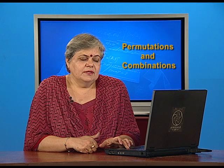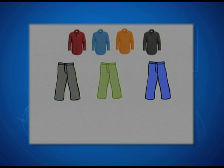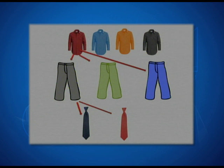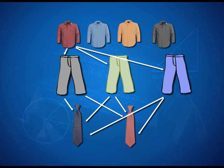Let us take another example. A person has 4 shirts and he can match them with 3 pants, and there are 2 ties that he can select from. How many ways can he get dressed? If we start with the first red shirt, he has 3 choices of pants and then either of 2 ties. So if he takes the red shirt and the grey pant, he has a choice of 2 ties — grey or red. With each of these trousers there are 2 ways he can dress by changing the tie. So with the red shirt, there are 6 number of ways in which he can dress.